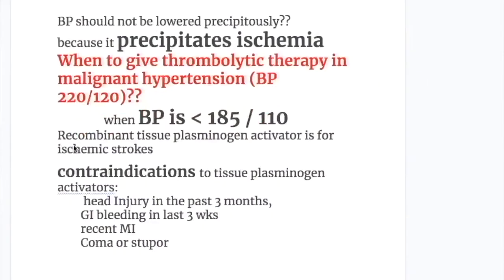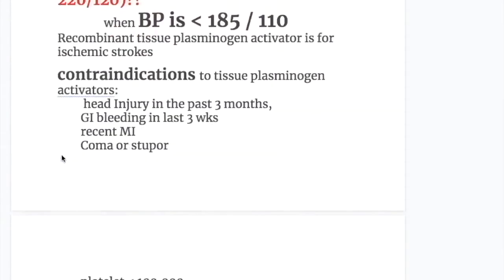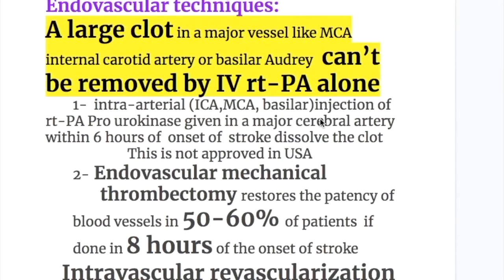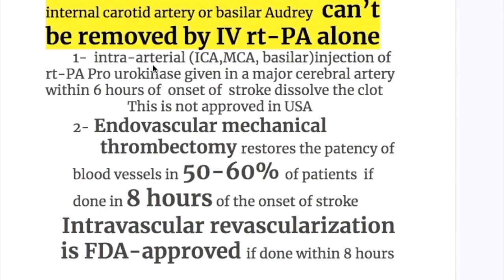Recombinant tissue plasminogen activator (tPA) is used for ischemic stroke. Contraindications include head injury in the past three months, GI bleeding in the past three weeks, recent MI, coma or stupor, platelet count less than 100,000, hematocrit less than 25%, or glucose less than 50 or more than 400 mg/100 mL. For large clots in major vessels such as the middle cerebral, internal carotid, or basilar artery, intra-arterial injection of recombinant tPA or pro-urokinase within six hours of stroke onset can dissolve the clot, though this is not approved in the USA.